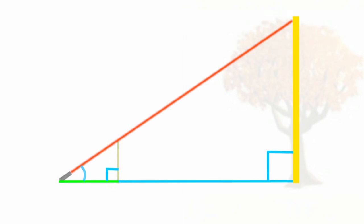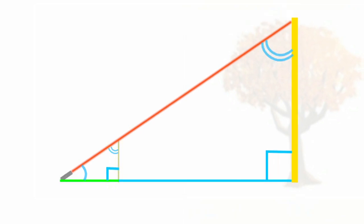If triangles have two identical angles, that means the third angle has to be the same, because the last angle is 180 degrees minus the two other angles. So now that we know these triangles are similar, we need to find their difference in scale.